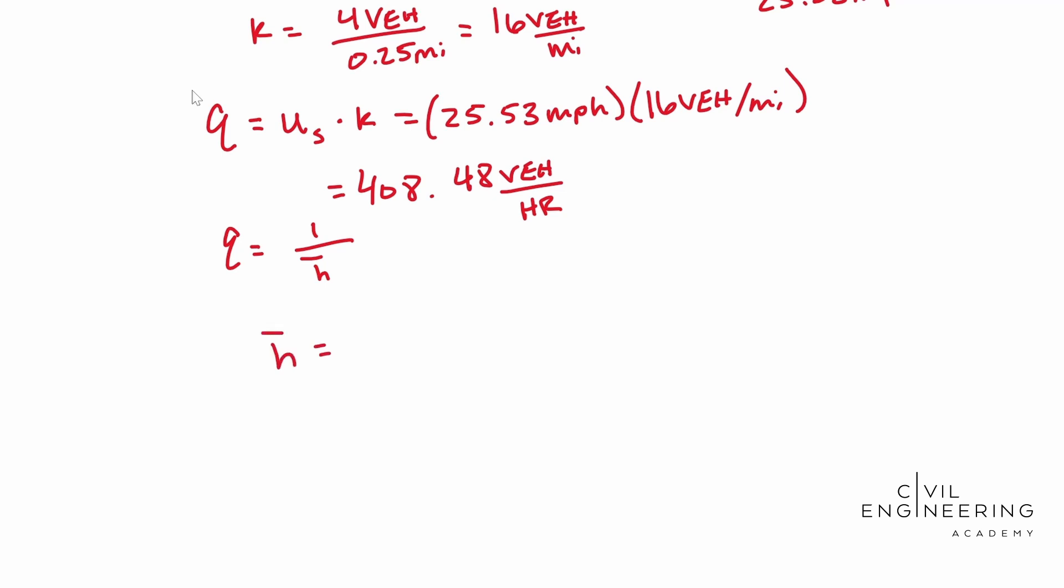We understand that if we solve for this H bar up here, this average time headway, it will end up being one over Q, which in this case is 408.48 vehicles per hour.